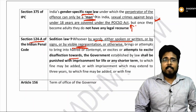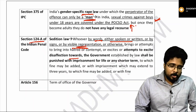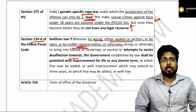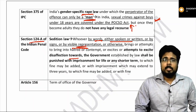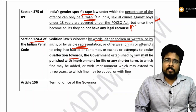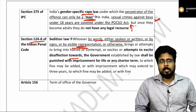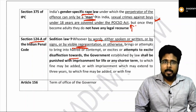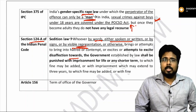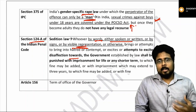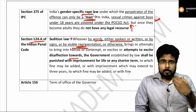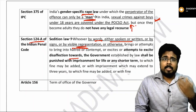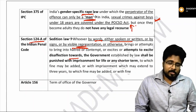Article 156 was in news. Article 156 talks about the office of the governor's term. The term of office of the governor is not given in the constitution. The governor of the state is appointed by the president of India and will be in the post as long as the governor enjoys the support of the president.